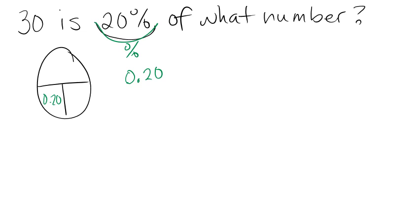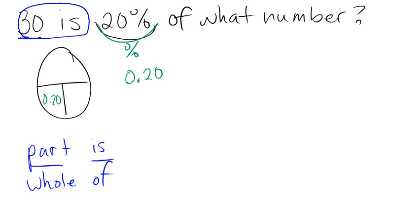And now we look for the other number, which will be 30. So what word is around 30? And that would be the word is. So 30 is. Remember part is the same as is and whole is the same as of. So 30 is, that's going to go on the top in the part.